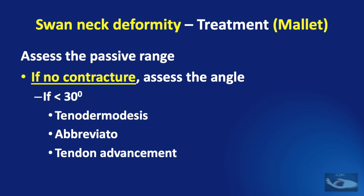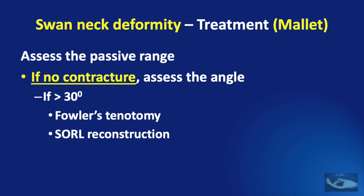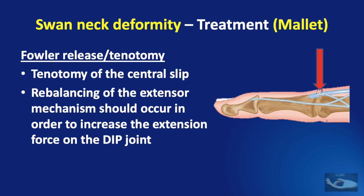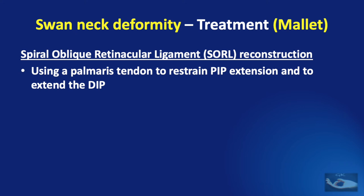If there is no contracture at the distal interphalangeal joint, we need to assess the angle — described in detail in the video on mallet finger injury. If this angle is less than 30 degrees, the procedures of tenodermadesis, the Abbreviato procedure, or tendon advancement procedures can be done. If the angle is more than 30 degrees, either a Fowler's tenotomy or an oblique retinacular ligament reconstruction needs to be done. The Fowler's tenotomy for swan neck deformity consists of tenotomy of the central slip, which leads to rebalancing of the extensor mechanism to increase the extension force at the DIP joint. In the spiral oblique retinacular ligament (SORL) reconstruction...